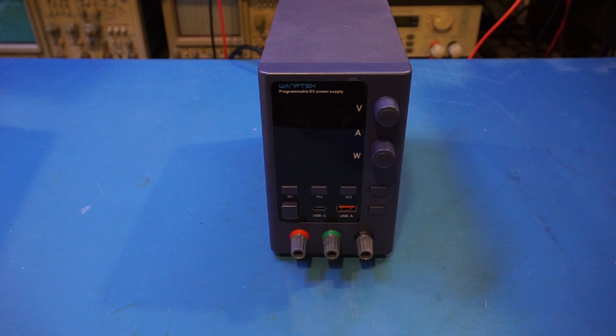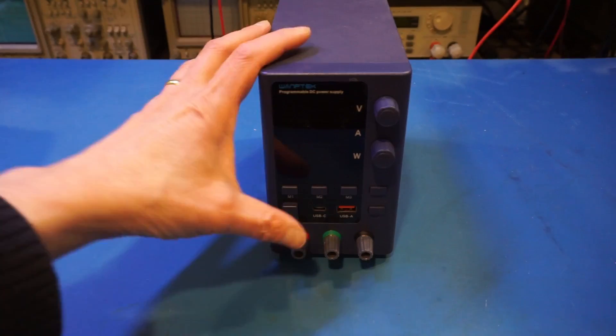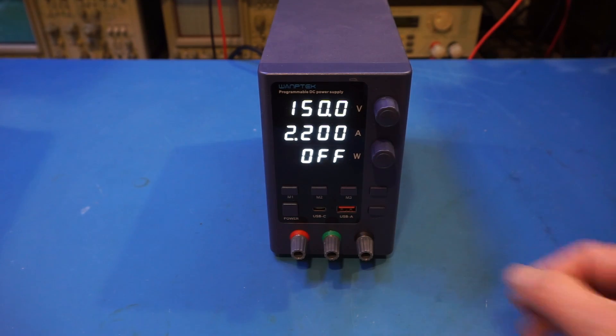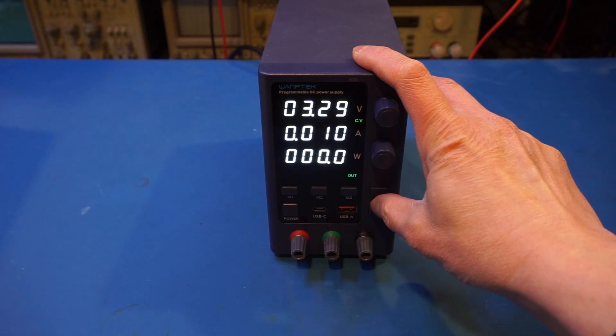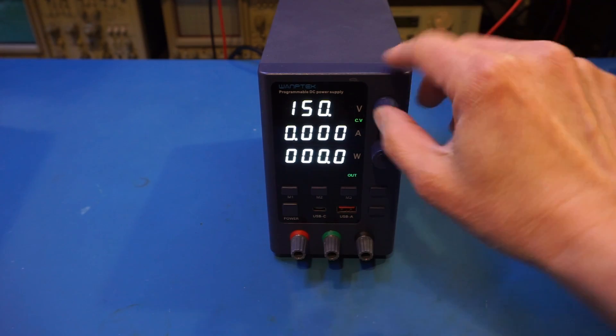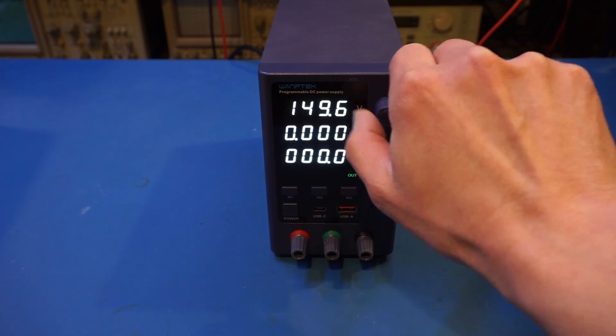Alright, now I have put everything back together and also changed the fuse. So now let's power it on. Aha, you can see that we powered it on. Let's turn the output on and try to adjust the voltage. So it appears that everything is working.